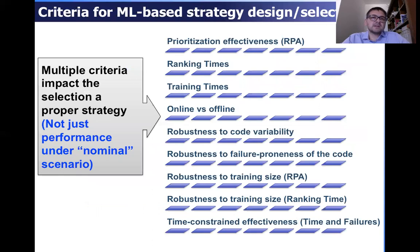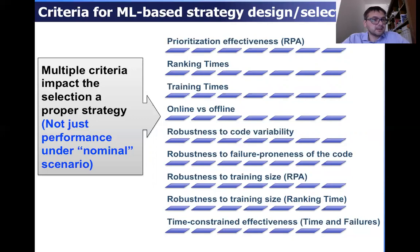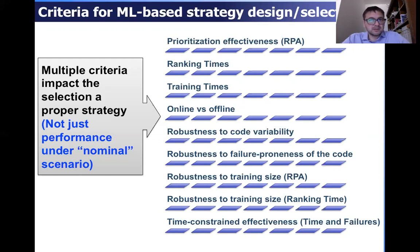So, beyond the specific results obtained for the algorithms we have tested, the key message is that when designing a learning-based strategy for prioritization in continuous integration, we should not just focus on performance under the nominal scenario. We have to take into account multiple criteria because these better characterize the technique and the context in which it is applied — both the code under test and the continuous integration process. We have identified a list of requirements investigated in the previous research questions. It is not an exhaustive list, but we believe it is a good starting point for researchers and practitioners who want to design or select a learning-based strategy for their prioritization task in continuous integration.